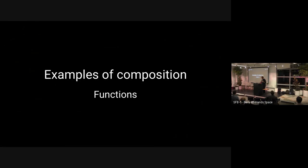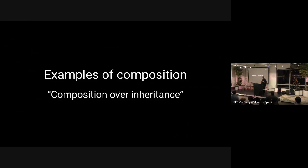Some examples to get our feet wet: functions are obviously composable. You have a function from A to B and a function from B to C — compose them and you get a function from A to C. The process is literally a function and the object is a type.